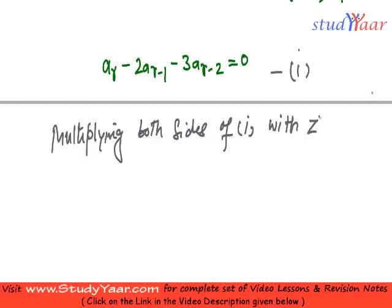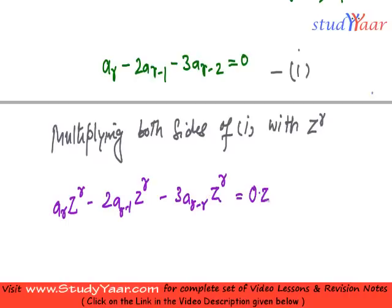So let us see what do we get. What I get is A_R Z^R minus 2A_{R-1} Z^R minus 3A_{R-2} Z^R is equal to 0 times Z^R, which is equal to 0.